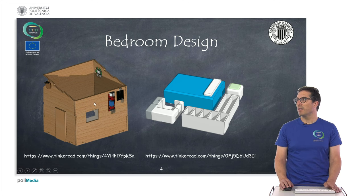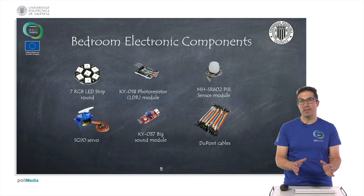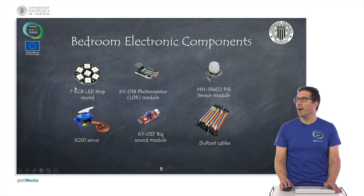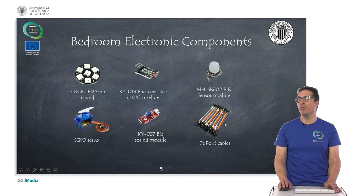You can find elements here to print, and also decoration elements to print, so you can load and print them yourself. These are the main electronic components we are proposing for this particular room: a 7 RGB LED strip with a round shape, a photo resistor (an LDR resistor), a passive infrared sensor (PIR sensor) to detect presence, a servo to control the window, a sound module (mic) to detect sound, and DuPont cables.